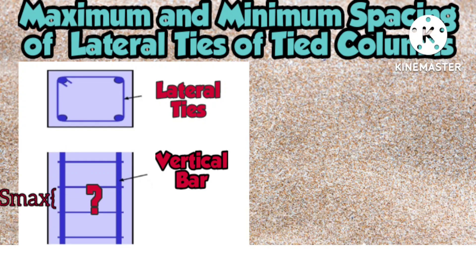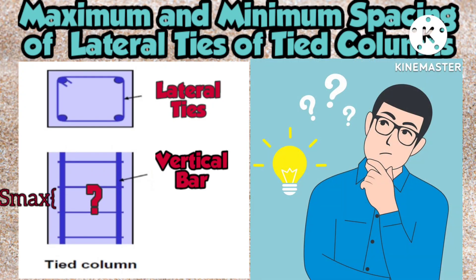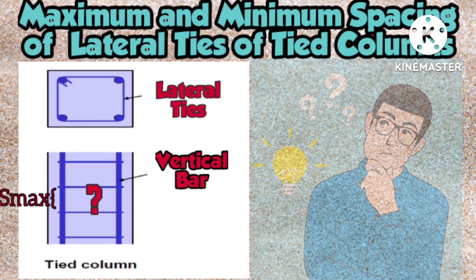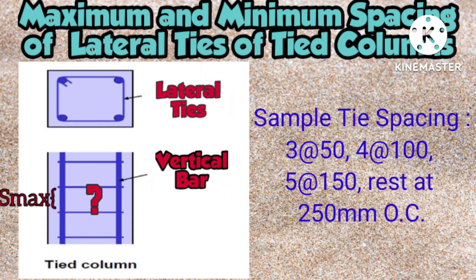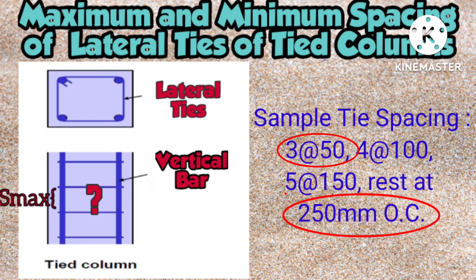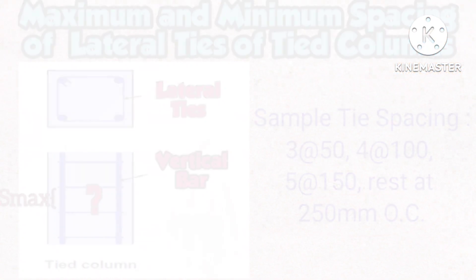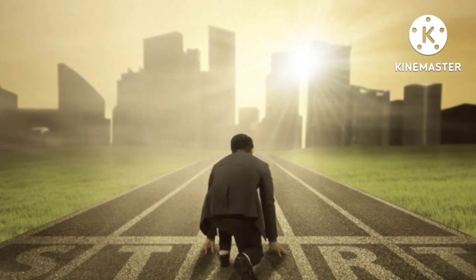But do you ever wonder how the spacing of these lateral ties is decided or computed? How to find the maximum and minimum spacing of lateral ties based on ECI code is what we are going to discuss today. So watch this video in full and let's get started!